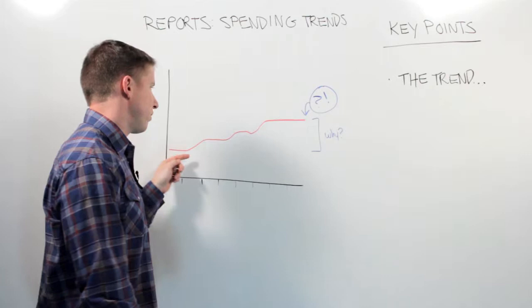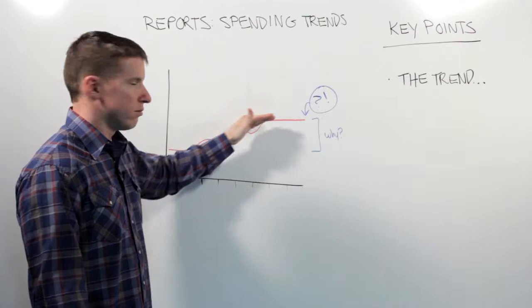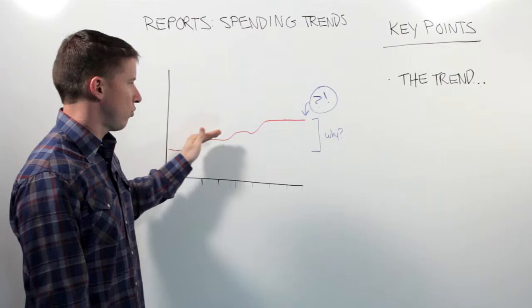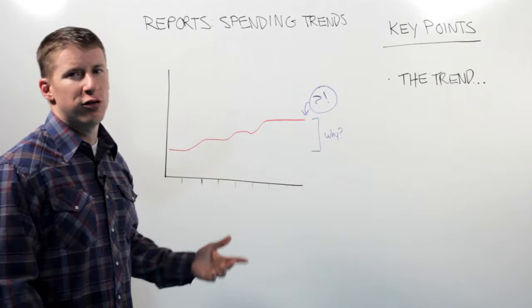Sometimes the answer is obvious. Oh, this is our heating bill, and it's gotten colder, so the heat goes up. Sometimes it could be like, my kids are growing, and this is the food bill. Maybe.